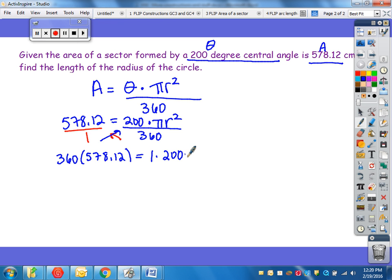So 1 times 200 times pi r squared. I'm going to use the calculator to simplify the left side there. So 360 multiplied by 578.12 gives me 208,123.2.